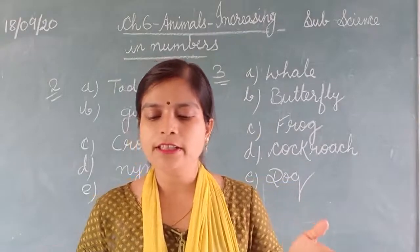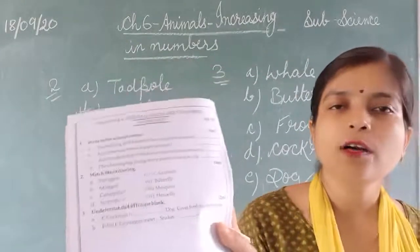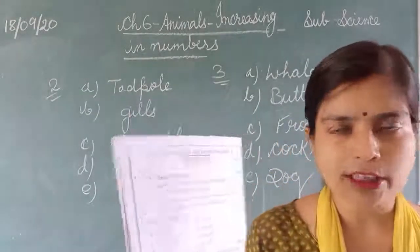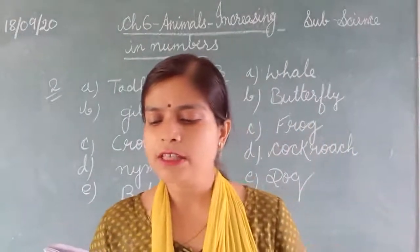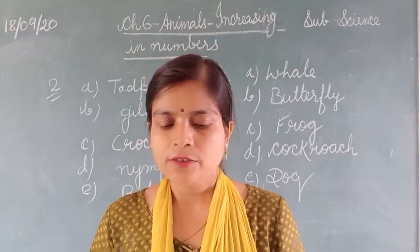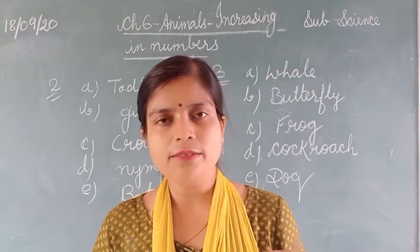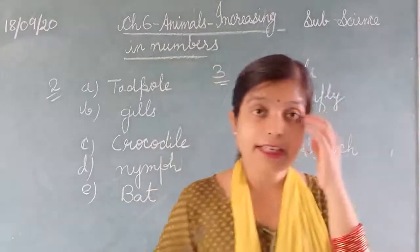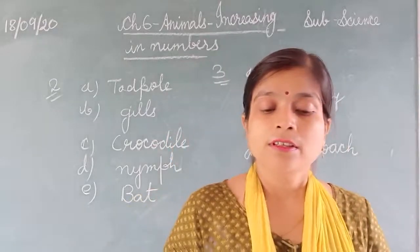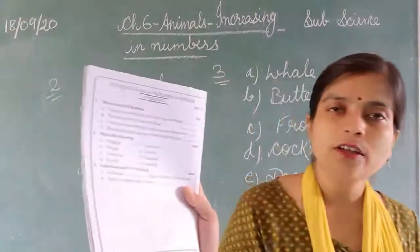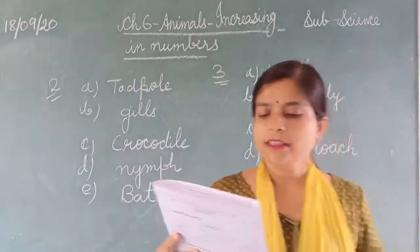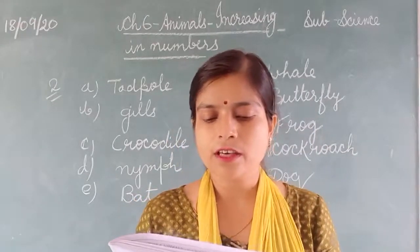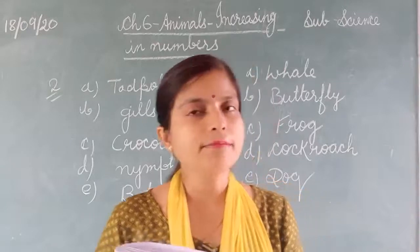Shedding of old skin by young insects is known as moulting. To produce more of their own kind is known as reproduction. Animals that give birth to young ones like themselves are mammals — dogs and cats are mammals. The developing young one present inside the yolk is known as the embryo. Now for match the following: match mosquito with wriggler, housefly with maggot, butterfly with caterpillar, and cockroach with nymph.